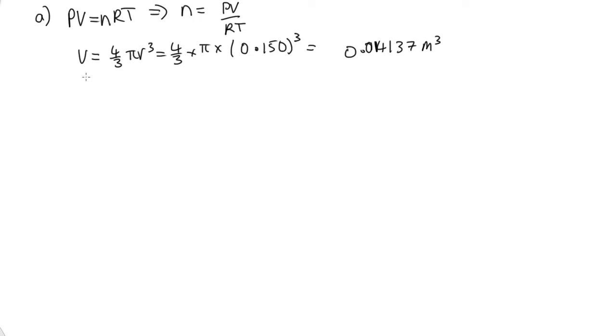Now we can just substitute into this equation for n. So n is equal to P, which was 1 atmosphere, 1.01 times 10 to the 5 pascals times 0.014137 over r, which is 8.314. And then we were told this was 20 degrees C. This needs to be in kelvins. So that's 20 plus 273.15 to convert from Celsius to kelvins. And solving this, we end up with 0.586 moles.